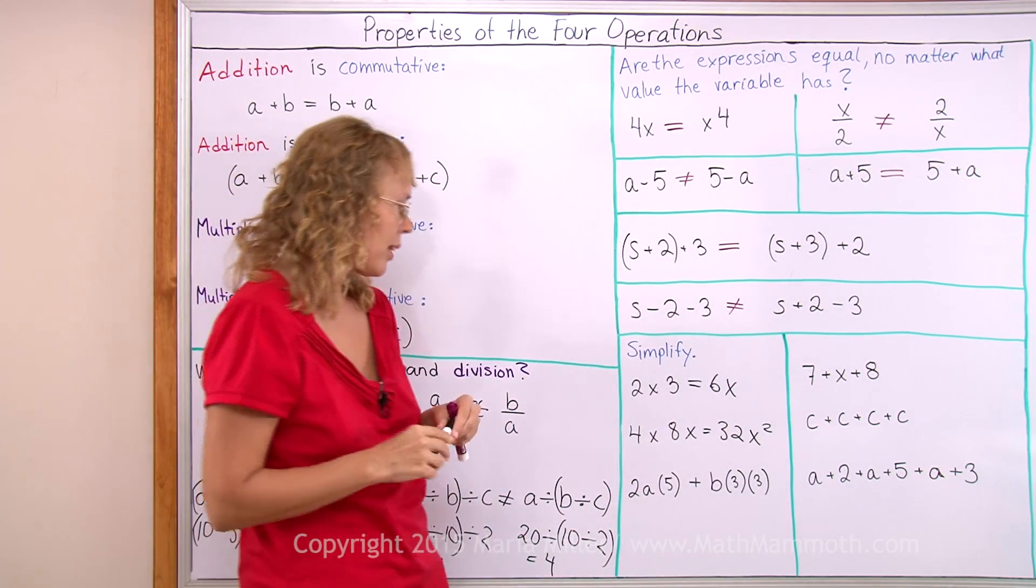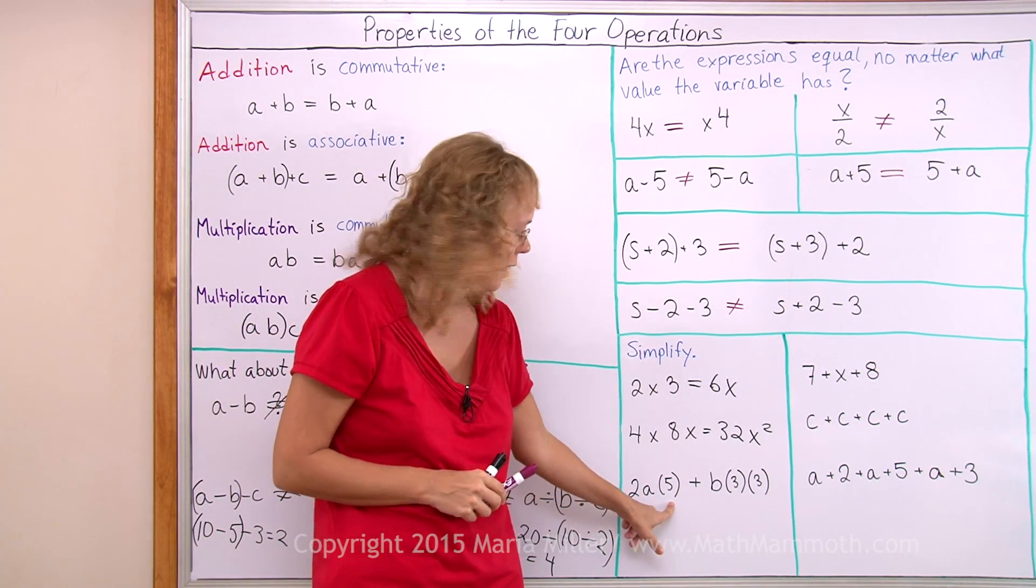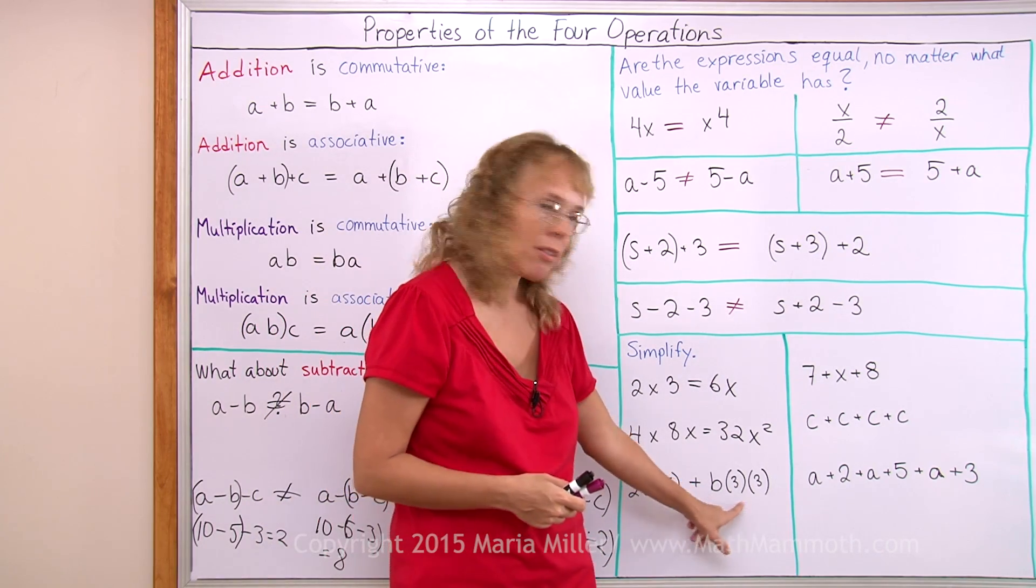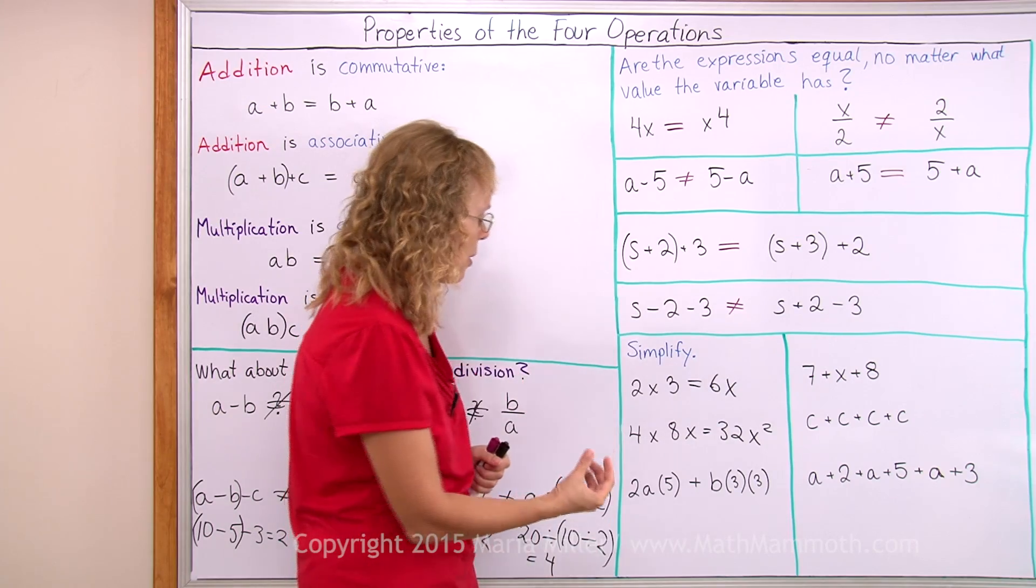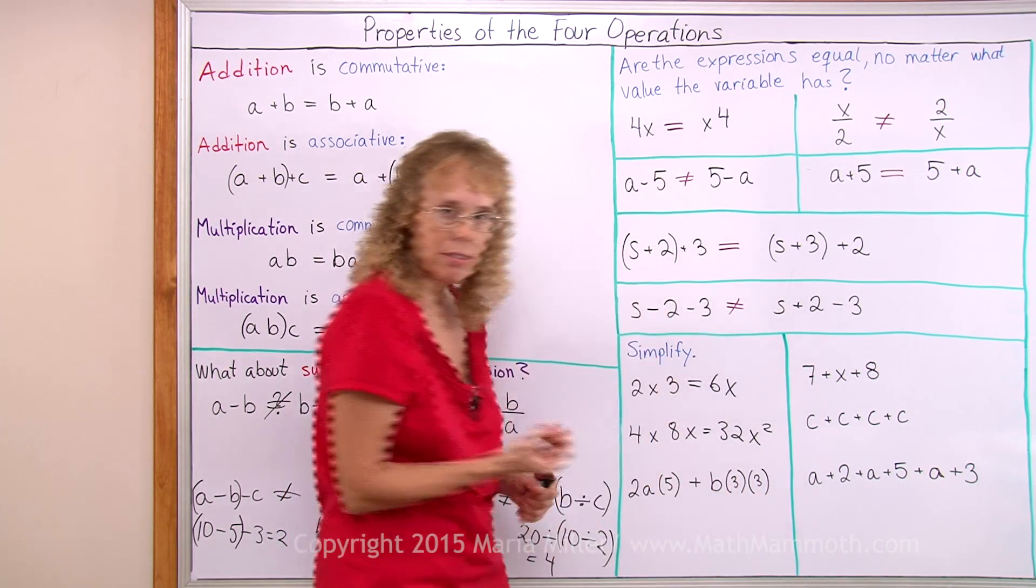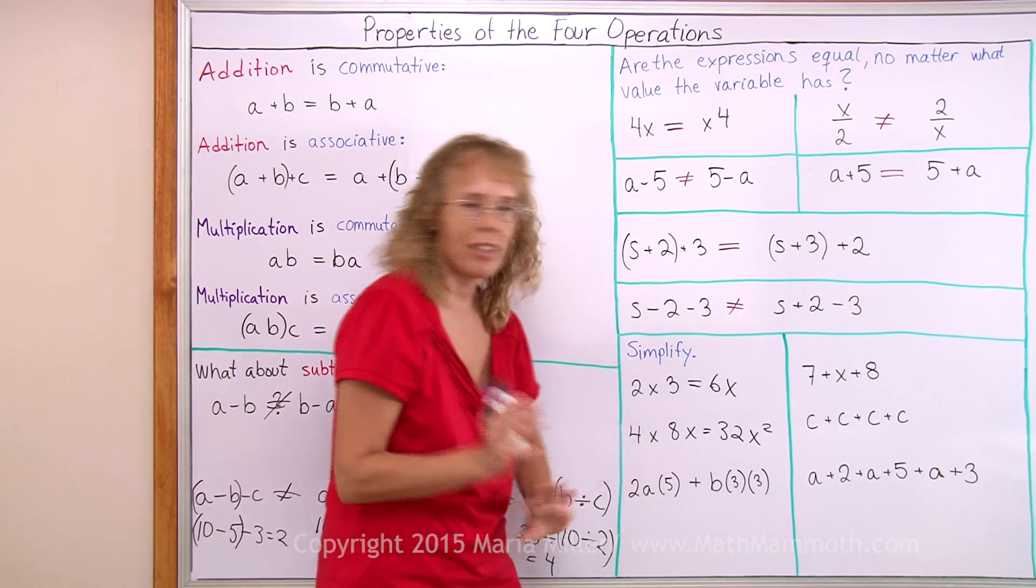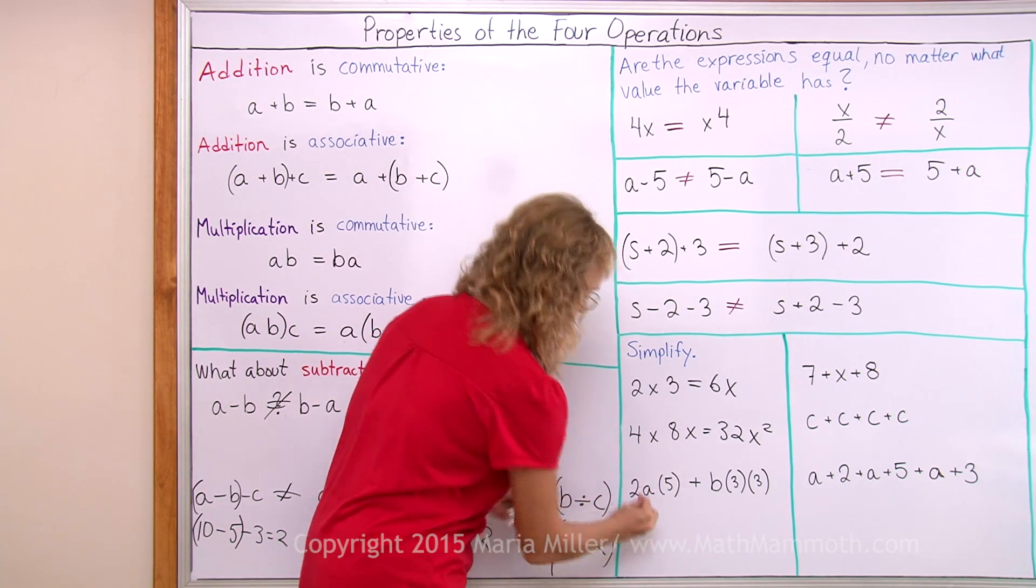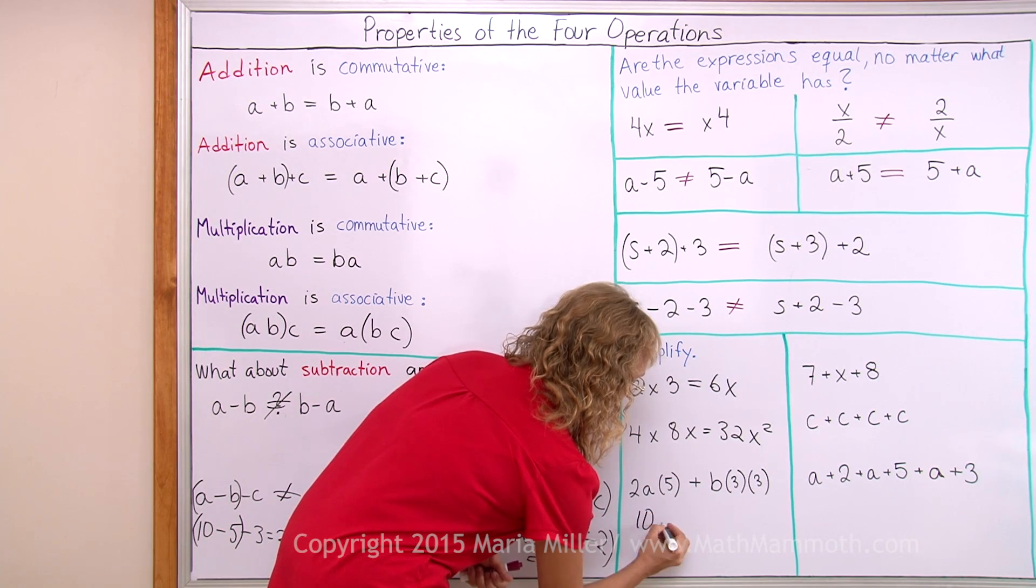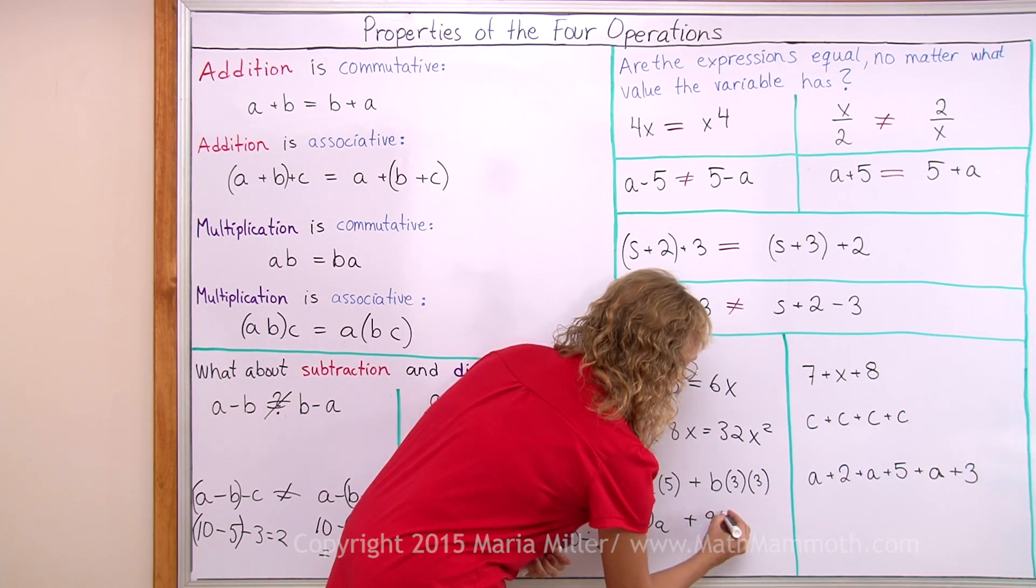Then over here, 2 times a times 5, 5 is in parenthesis to indicate it's multiplied, and then b times 3 times 3. I can do the same here. I can multiply 2 and 5, and over here I can multiply 3 and 3. But I cannot do anything as far as the addition goes and I cannot multiply 5 and 3 or anything like that. But within this expression here, there's just multiplications. So that simplifies to 10a. And then here in this other expression I can multiply 3 and 3 and I get 9 times b.